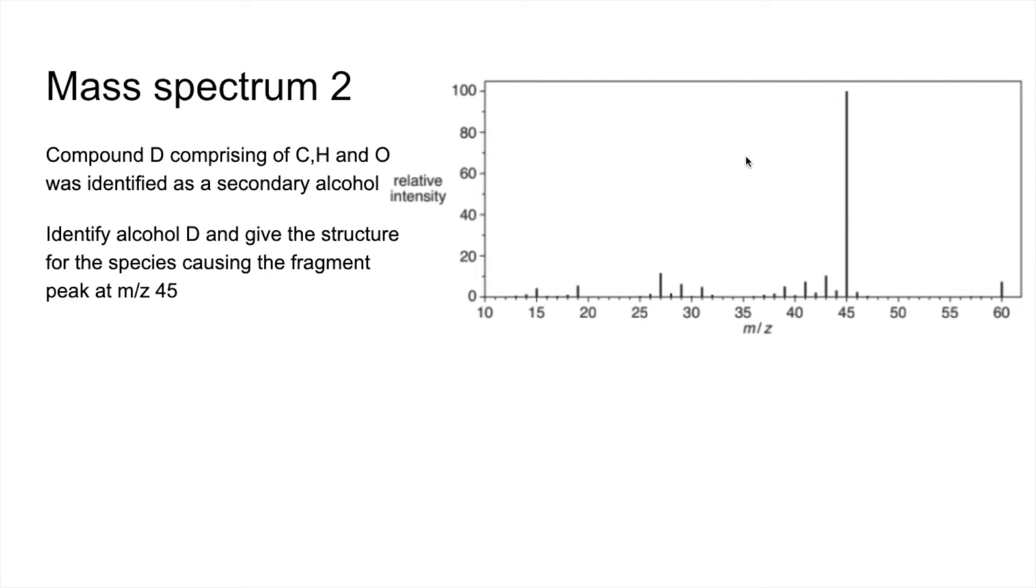Like we did with the first one, the first thing I'm going to do is give the molecular ion peak. So we've got an MR of D must be 60. We know that this is a secondary alcohol, so there's only one thing it can be, and that's propane-2-ol.